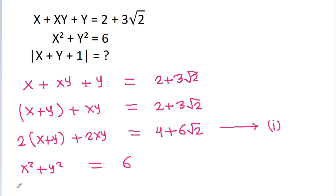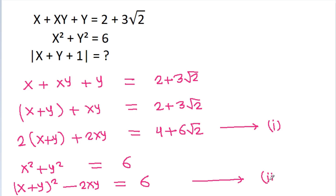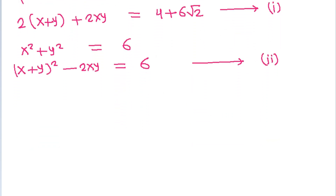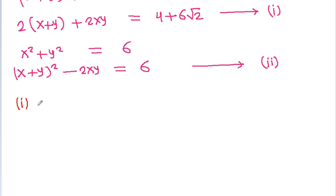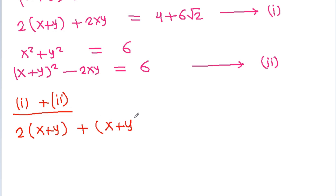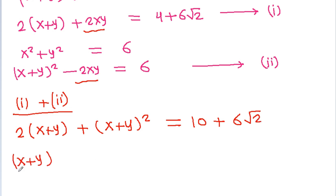And x square plus y square is equal to x plus y whole square minus 2xy, which is equal to 6. Suppose this is equation 2. If we add equation 1 and equation 2, then we will get 2 times x plus y plus x plus y whole square, and the 2xy terms cancel. On the right-hand side, 4 plus 6 is 10 plus 6 root 2. So it is x plus y whole square plus 2 times x plus y is equal to 10 plus 6 root 2.